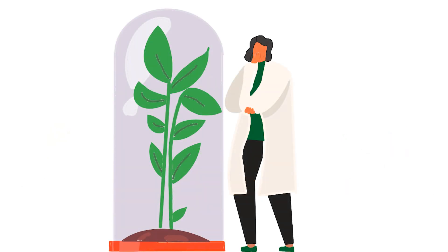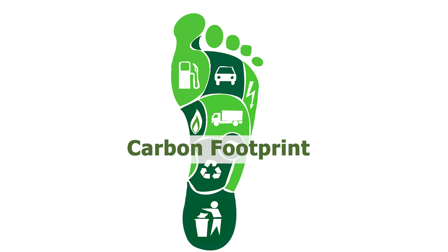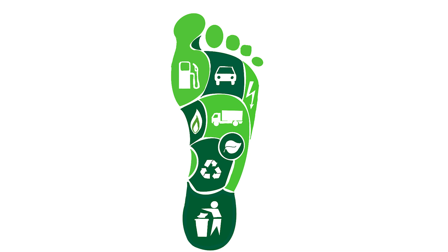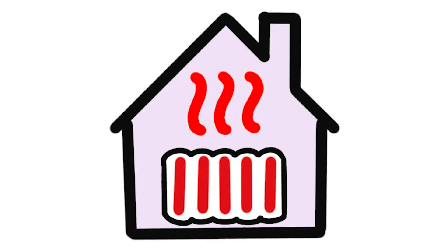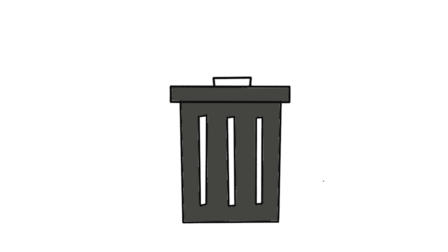Scientists use a term to describe the total amount of greenhouse gases emitted by human activities: a carbon footprint. Each one of us has a carbon footprint, which is the amount of greenhouse gases that are released into the atmosphere due to our daily activities. These activities can range from heating our homes and how we commute, to how much waste we produce.